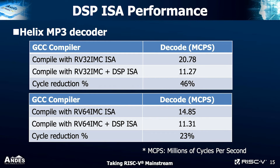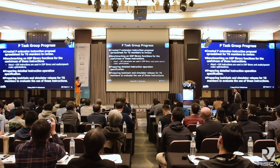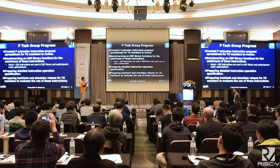This slide shows the importance of the compiler automatically generating DSP instructions. In an MP3 decoder, using only compiler optimization without hand tuning, for RV32 we get a 64% cycle reduction, and a 23% reduction for RV64.